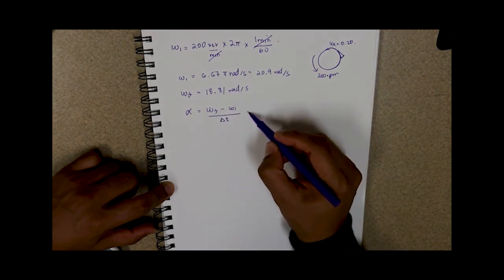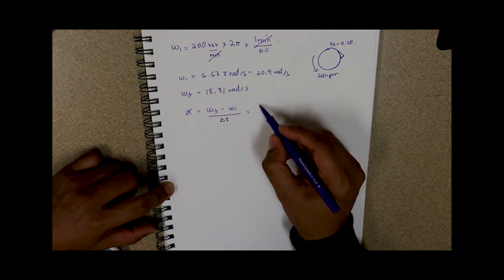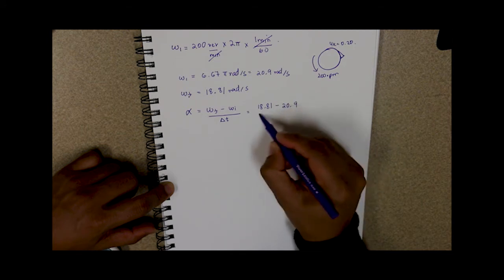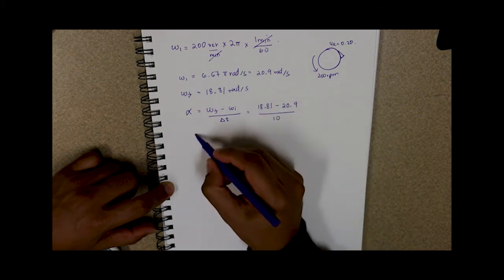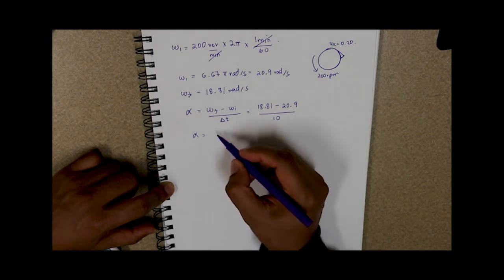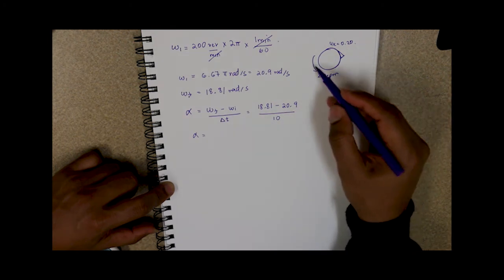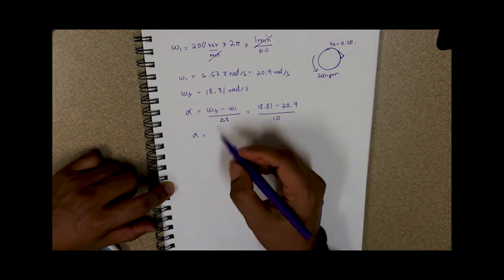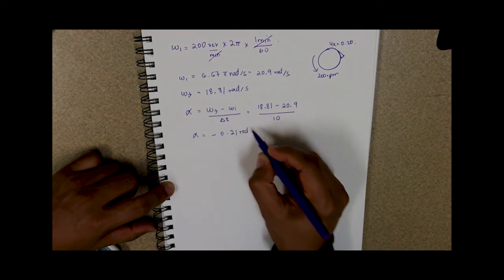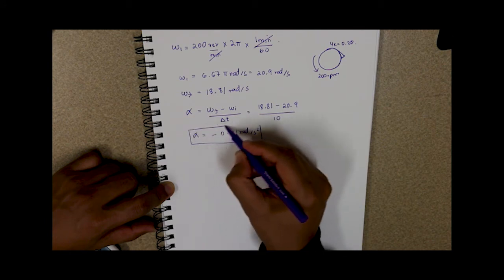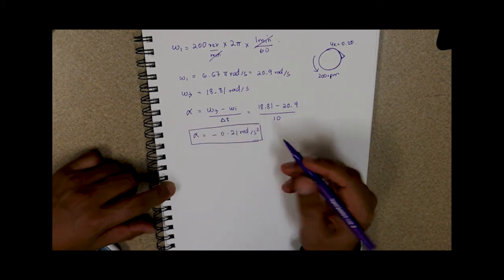So we end up with, our final is 18.81 minus 20.9 over 10 seconds. So we end up with an angular acceleration, essentially it's a deceleration because the rim of the grindstone slowed down after you press the knife up against it. So it's a deceleration of negative 0.21 radians per second squared. So now we've found our angular deceleration.